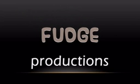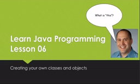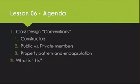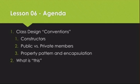Hello there and welcome again. My name is Michael Fudge and this is another episode of learning to program in Java. We're up to Lesson 6, which is the culmination of all the lessons we've learned so far. Now we're going to get down to business and learn to create our own classes and build objects from those classes. On the agenda today, we'll talk about conventions for designing classes, specifically constructors, the difference between public and private members, and object-oriented concepts like encapsulation.